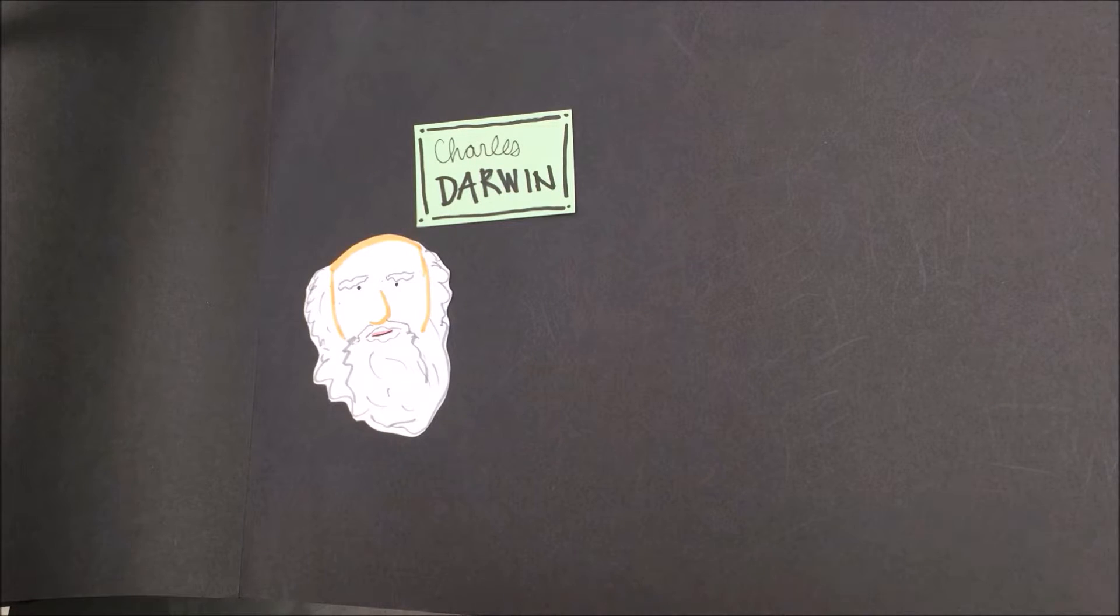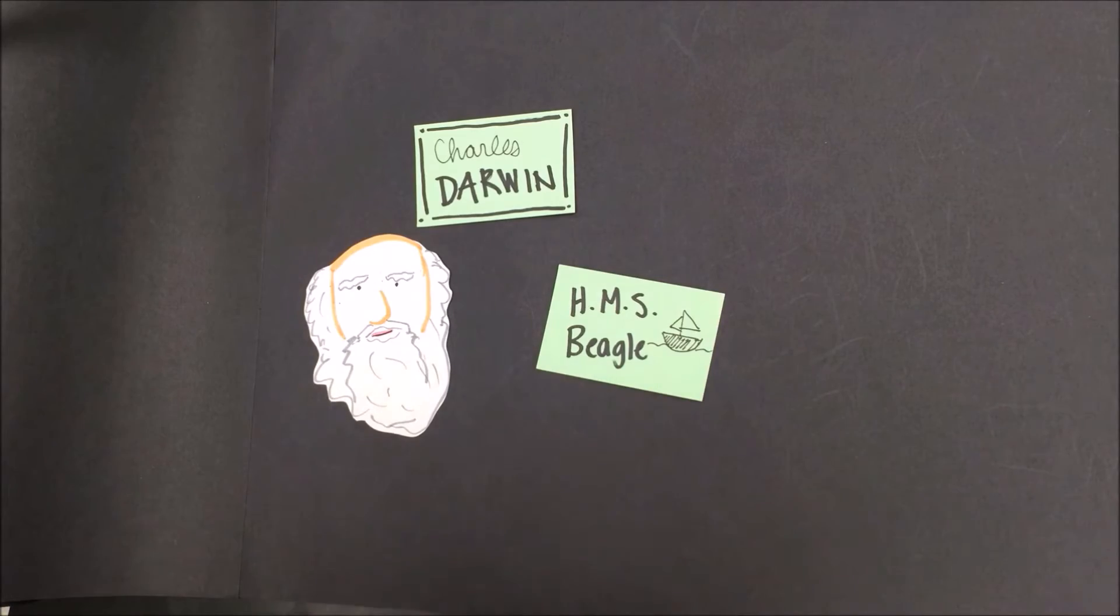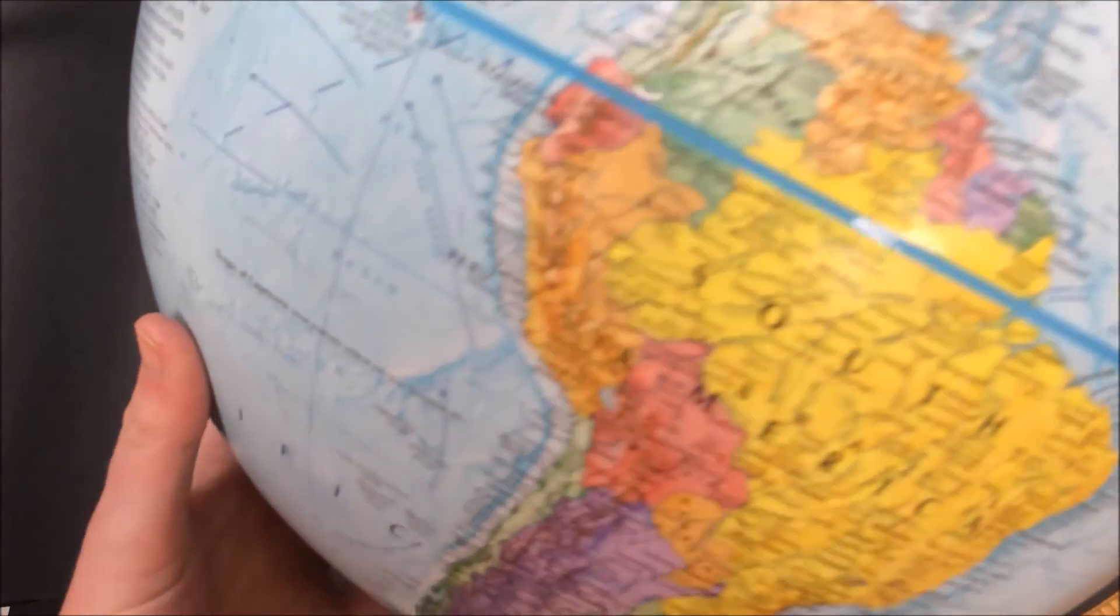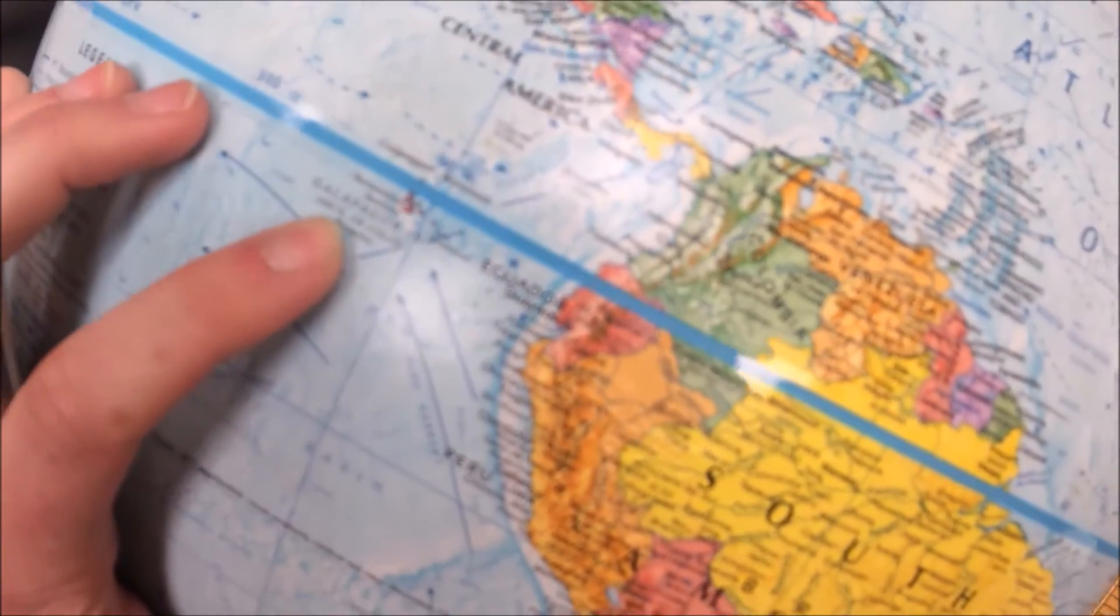Charles Darwin was not always a scientist. He started out his life wanting to be a doctor and then a priest, and then eventually settled on the science route when he signed up for a round-the-world voyage on the HMS Beagle. Darwin traveled many places, but perhaps the most famous place he visited were the Galapagos Islands right off the coast of Ecuador.